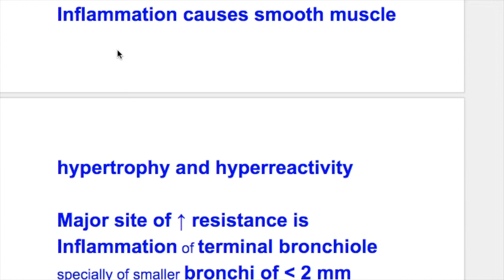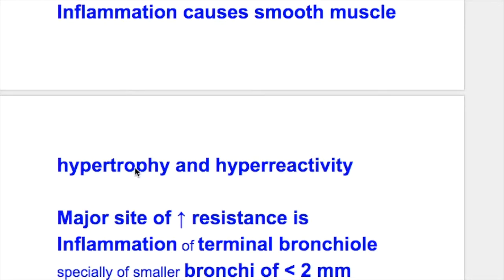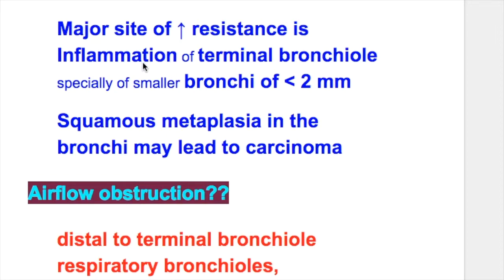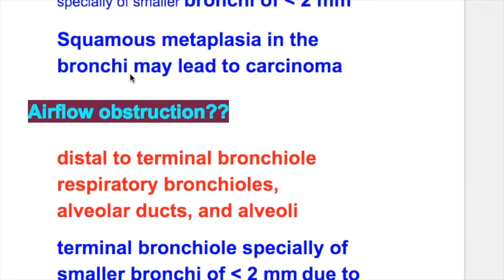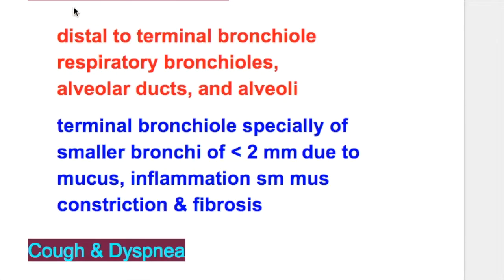In chronic bronchitis, inflammation causes smooth muscle hypertrophy and hyperactivity. The major site of increased resistance is inflammation of terminal bronchioles, especially of smaller bronchi of less than 2 mm in diameter. Squamous metaplasia may lead to carcinoma in chronic bronchitis.